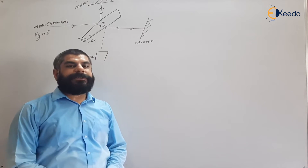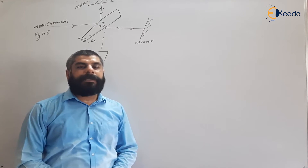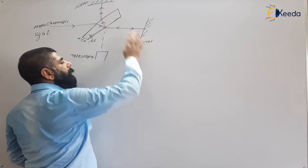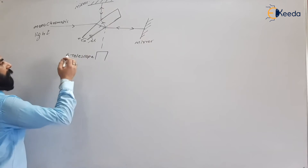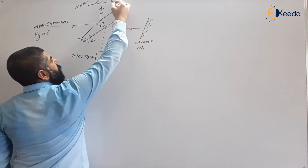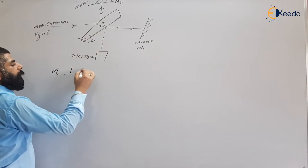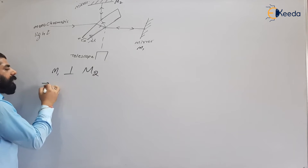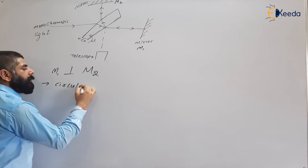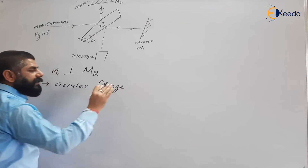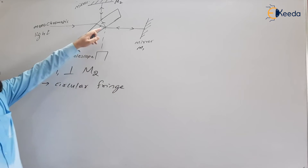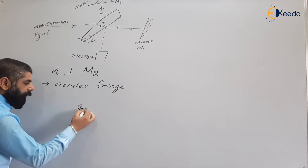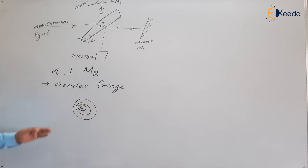The type of fringes observed on the telescope depends on the angle between the two mirrors. If M1 is perpendicular to M2 — that is, placed at 90 degrees to each other — then the fringes observed on the telescope are circular fringes.